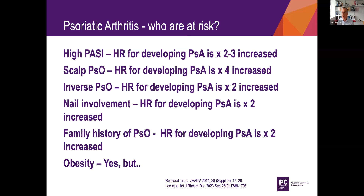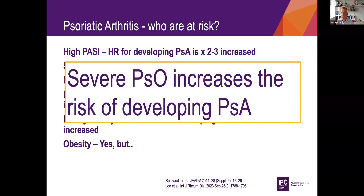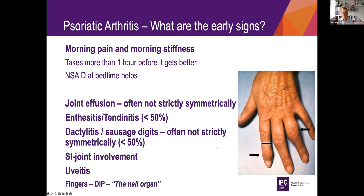Psoriatic arthritis is something where risk increases depending on who you are and what your psoriatic condition is. If you boil it down to a single sentence: severe psoriasis increases the risk of developing psoriatic arthritis. So the more severe your psoriasis is, the more likely you are to develop an arthritic condition. It's usually not strictly symmetrical, and up to around 50% suffer from enthesitis or tendonitis, especially in the feet.